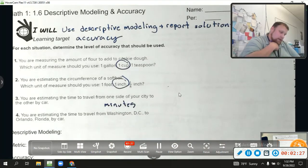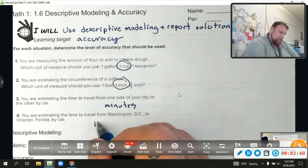You are estimating the time to travel from Washington, DC to Orlando, Florida by car. Well, an argument can be made for days if you talk about the amount of days you take, because some people can take up to two days. But really, it's about a 14-hour drive, so I'm gonna say hours.